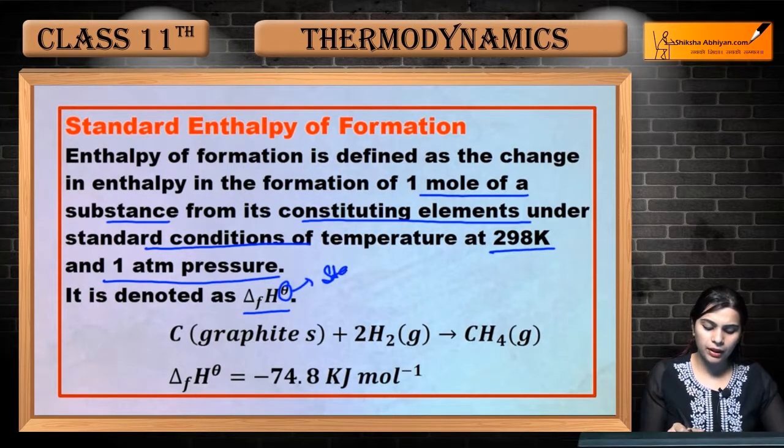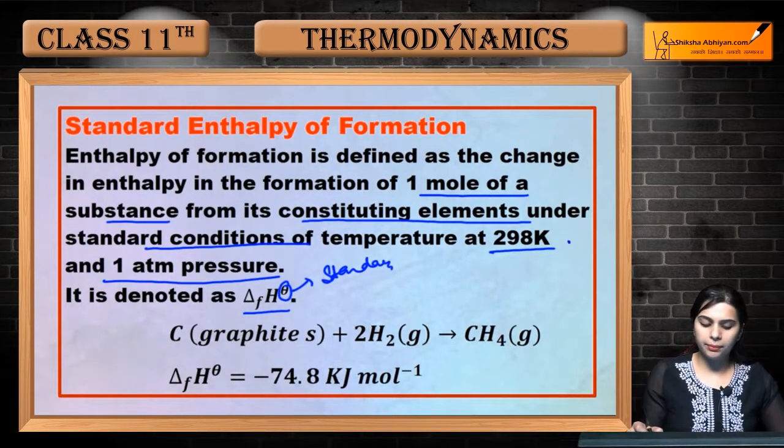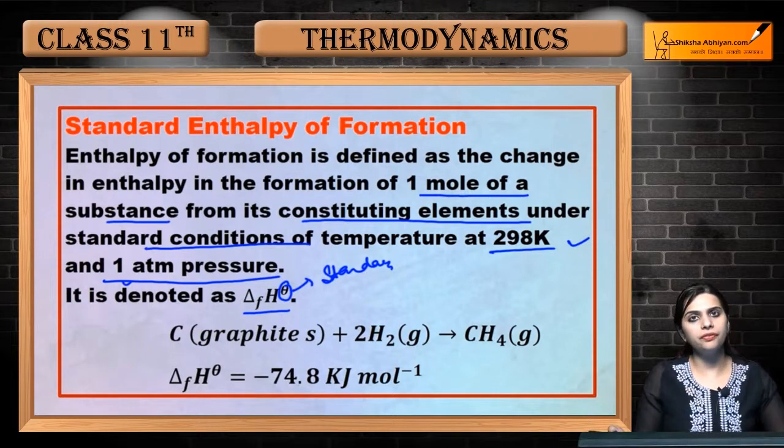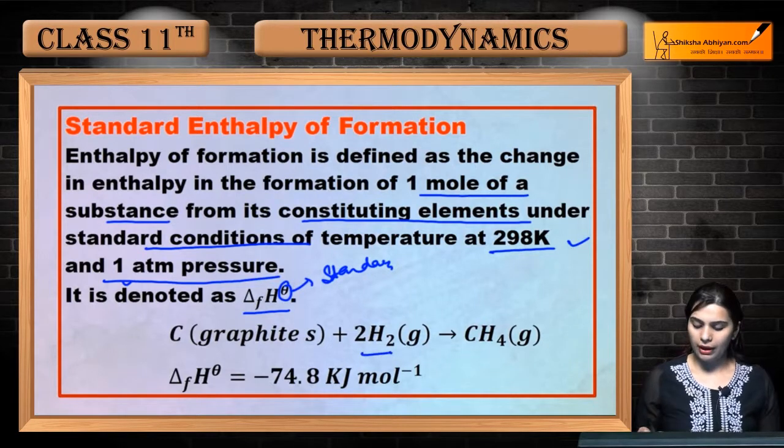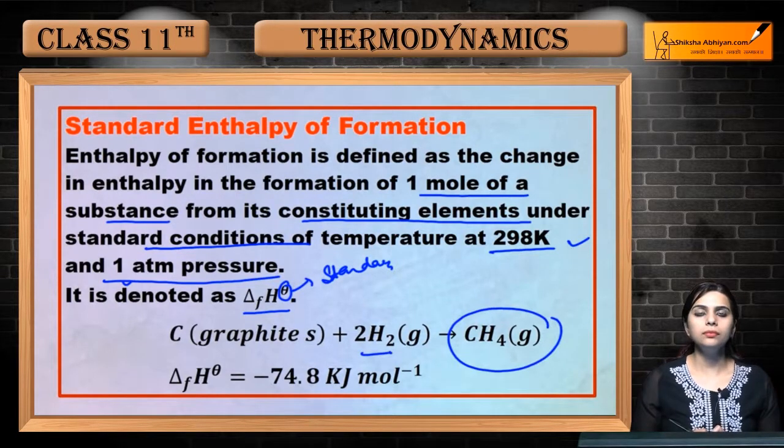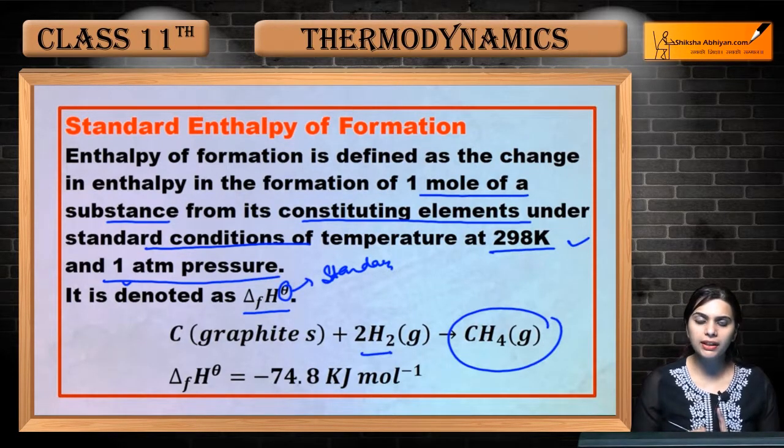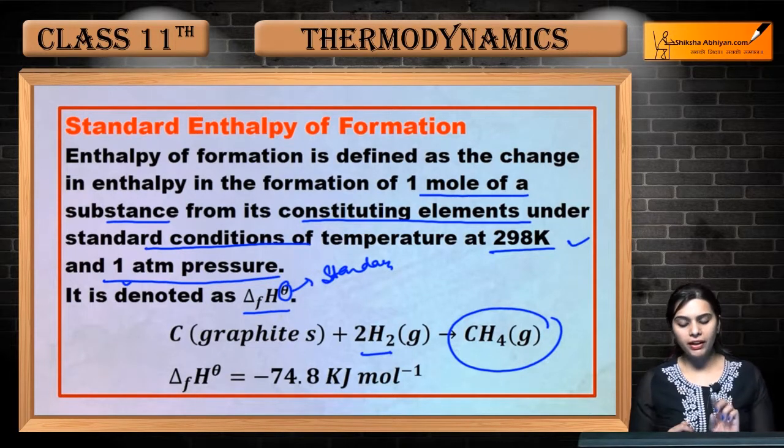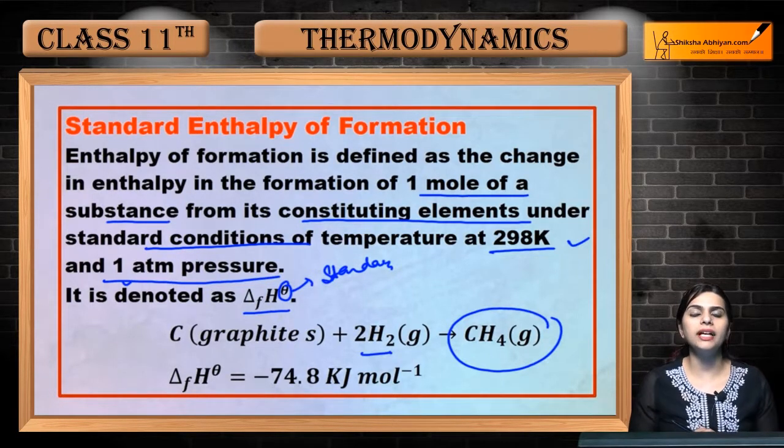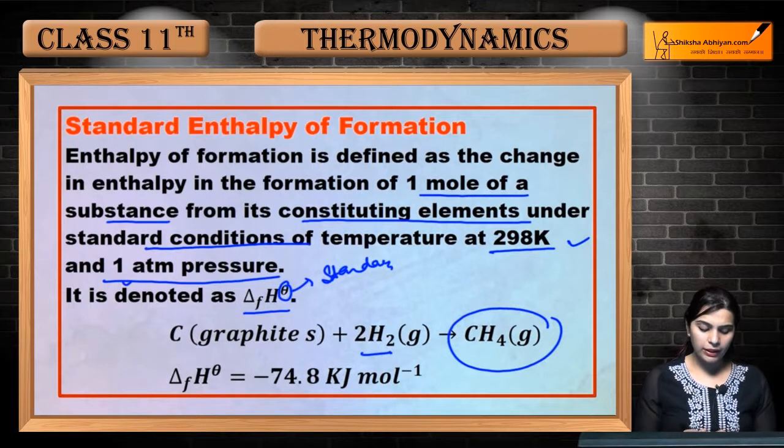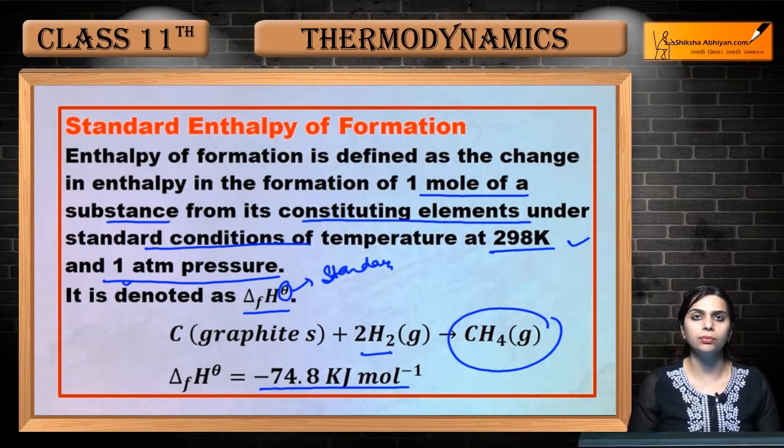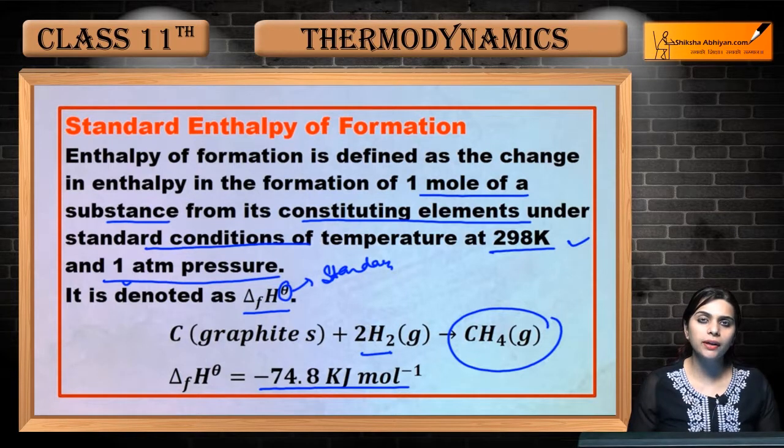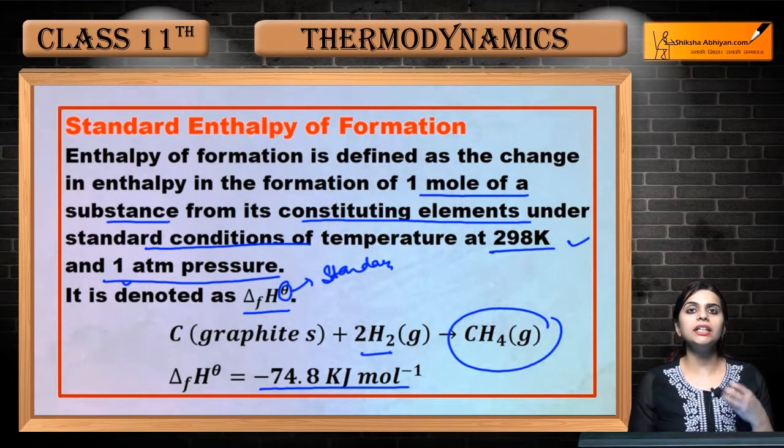For example, if you heat graphite with hydrogen, you get methane. When one mole of graphite and two moles of hydrogen gas react, the value is minus 74.8 kilojoules per mole. The negative sign indicates the reaction is exothermic and heat is evolved.